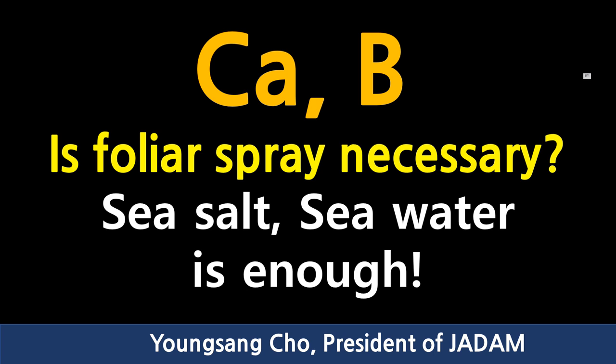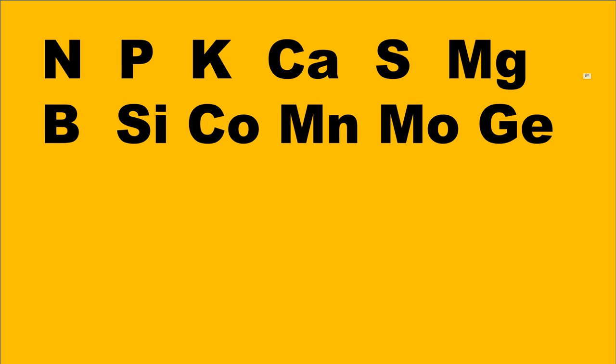A lot of people face confusion while studying agriculture because of nitrogen, phosphoric acid, potassium, calcium, sulfur, magnesium, boron, cobalt, manganese, molybdenum, germanium, and selenium, which are needed in farming. People often talk about balancing these elements to be a successful farmer. And today, I'm going to talk about calcium and boron in this video.